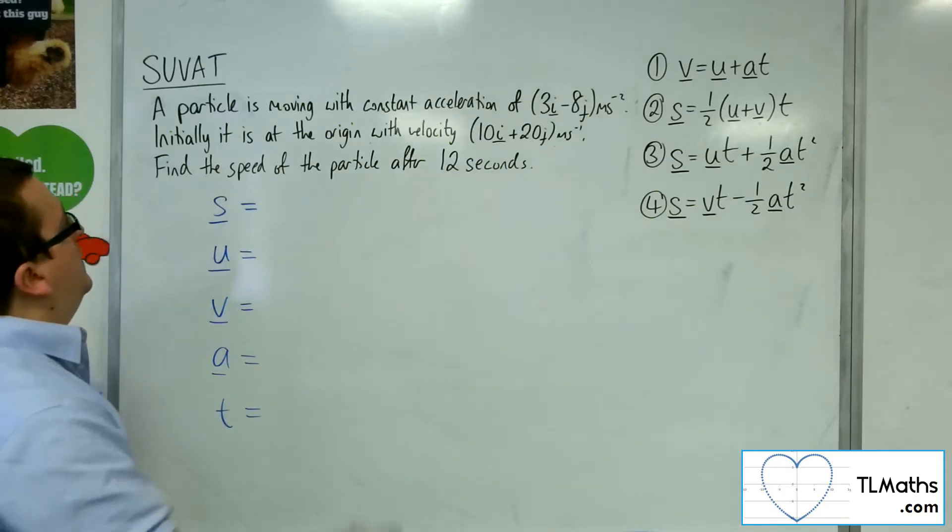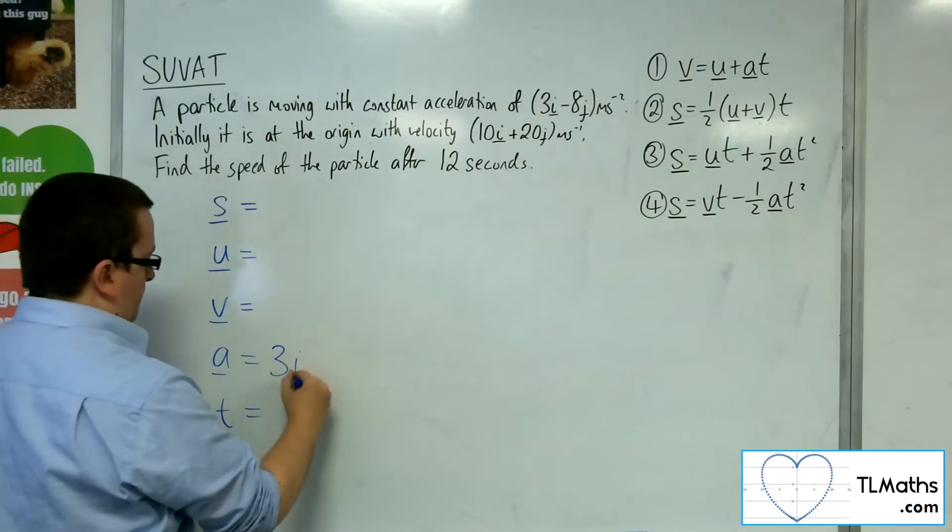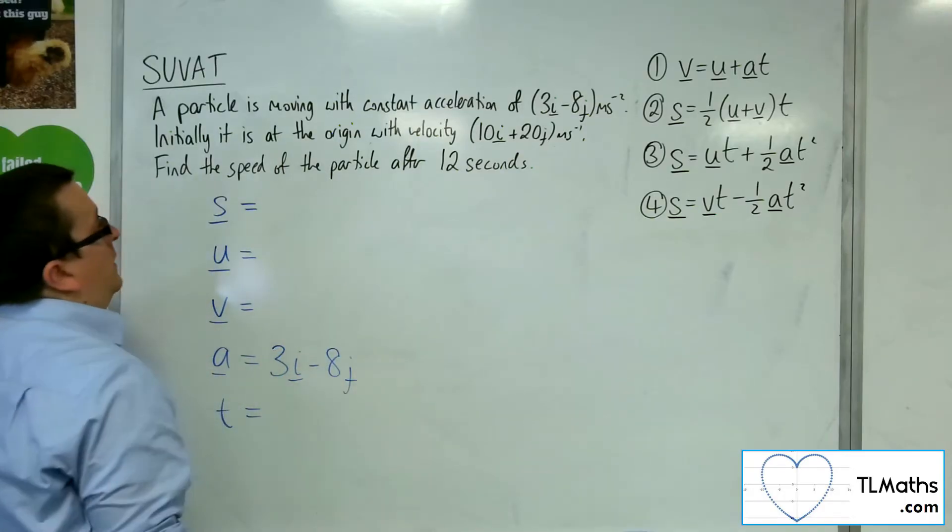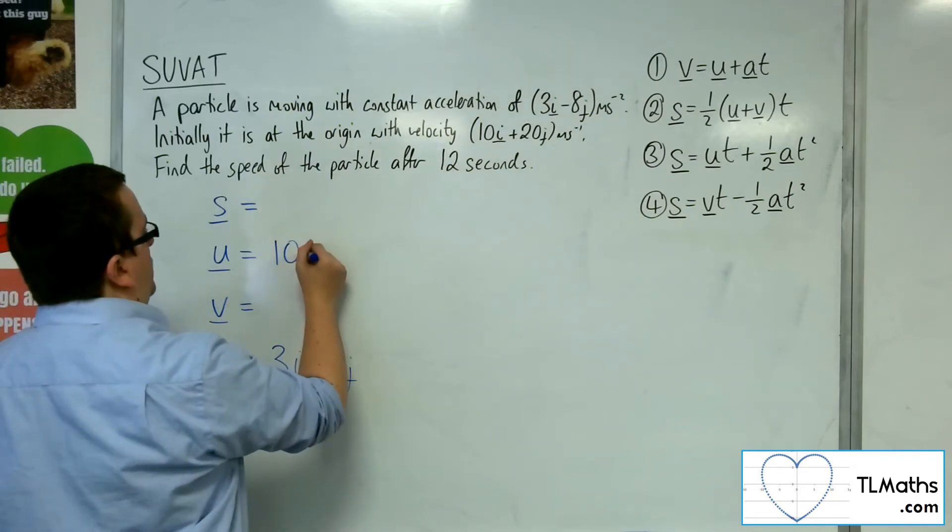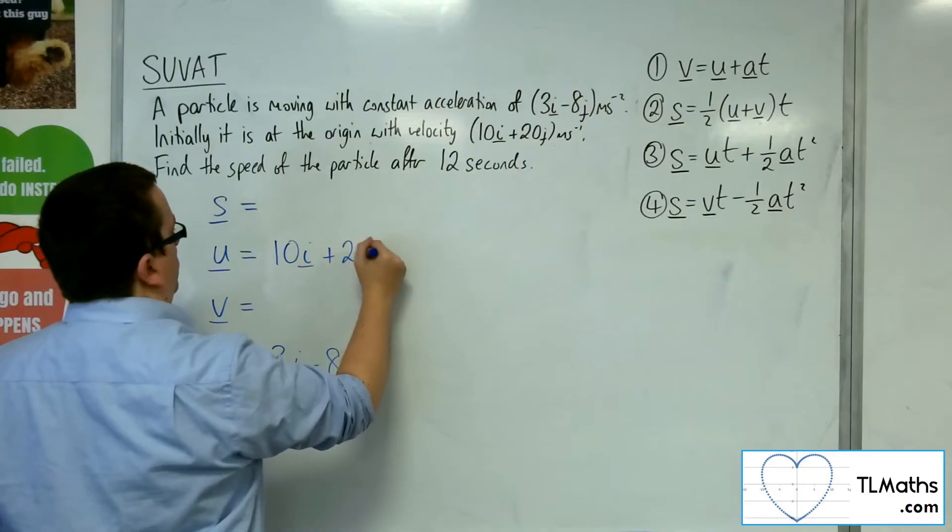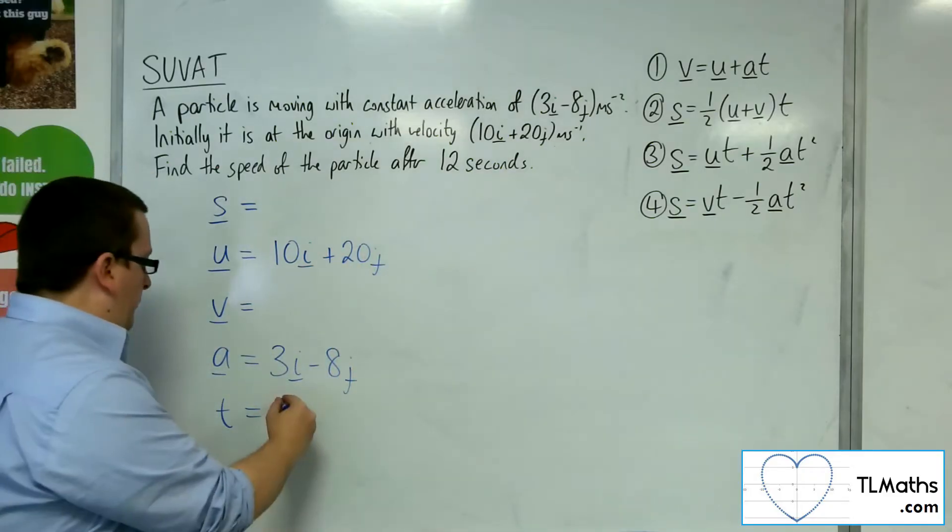So the acceleration of 3i minus 8j, and then we've got initially it's at the origin with velocity 10i plus 20j. Find the speed of the particle after 12 seconds.